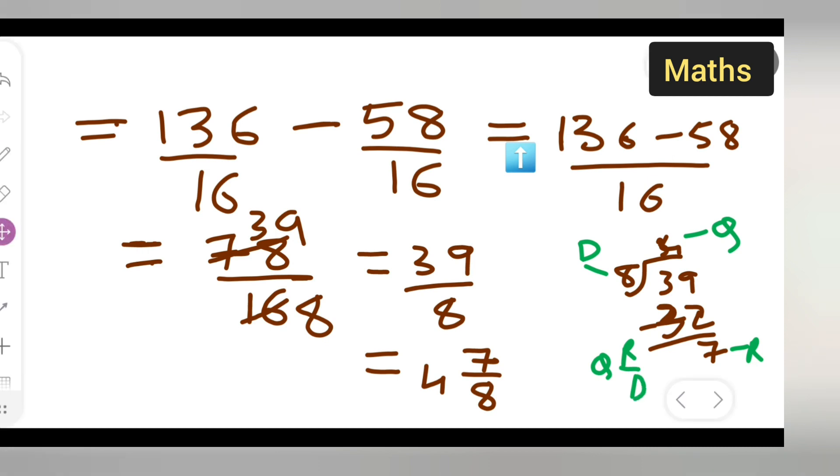The quotient is 4, remainder is 7, and dividend is 8. I hope you have understood how to evaluate the given equation. Thanks for watching.